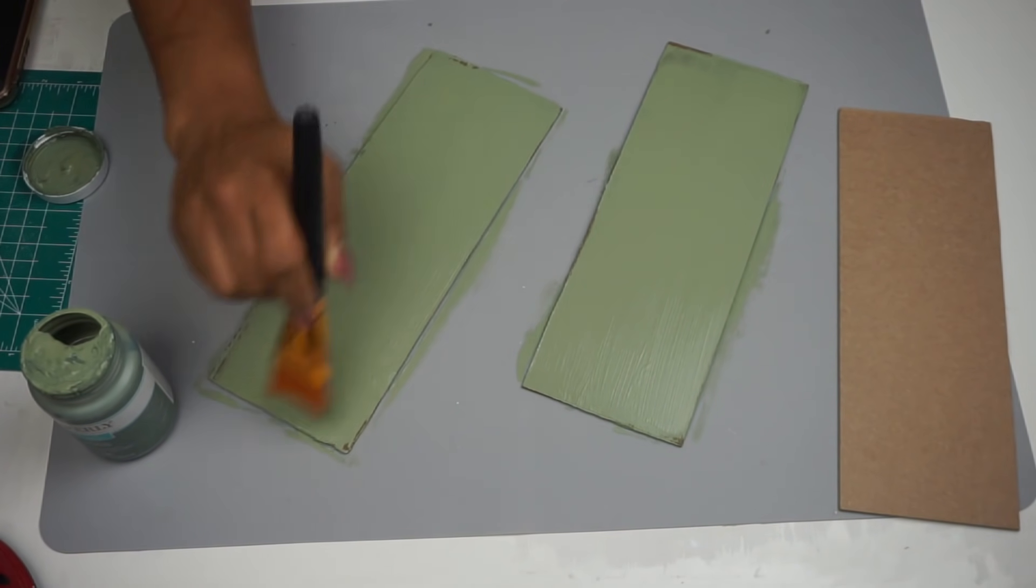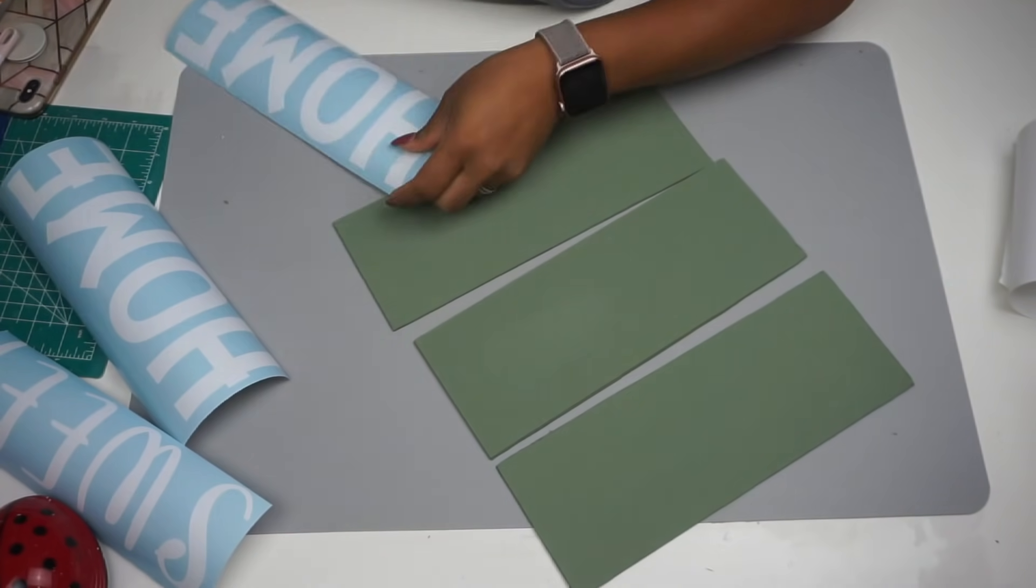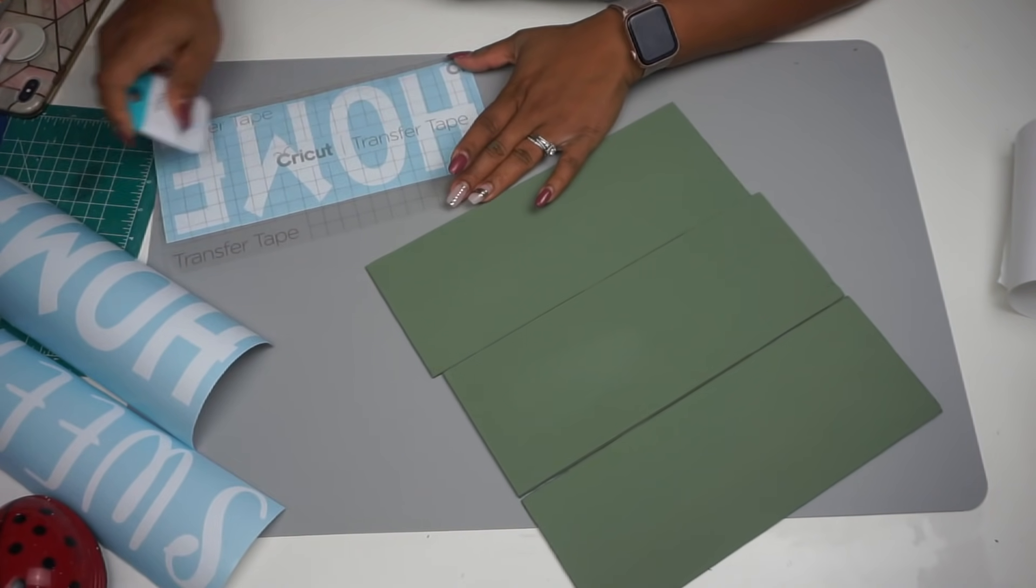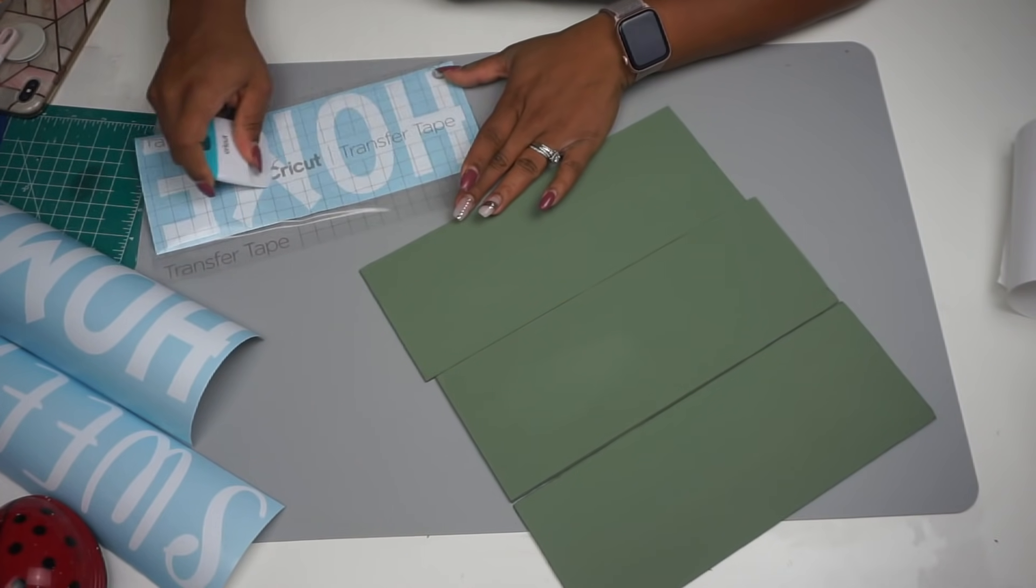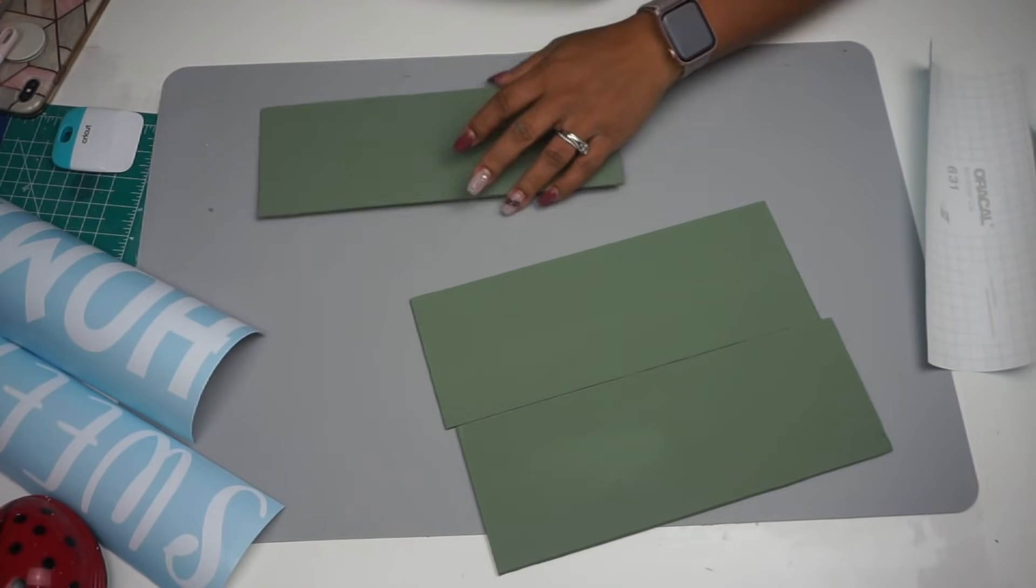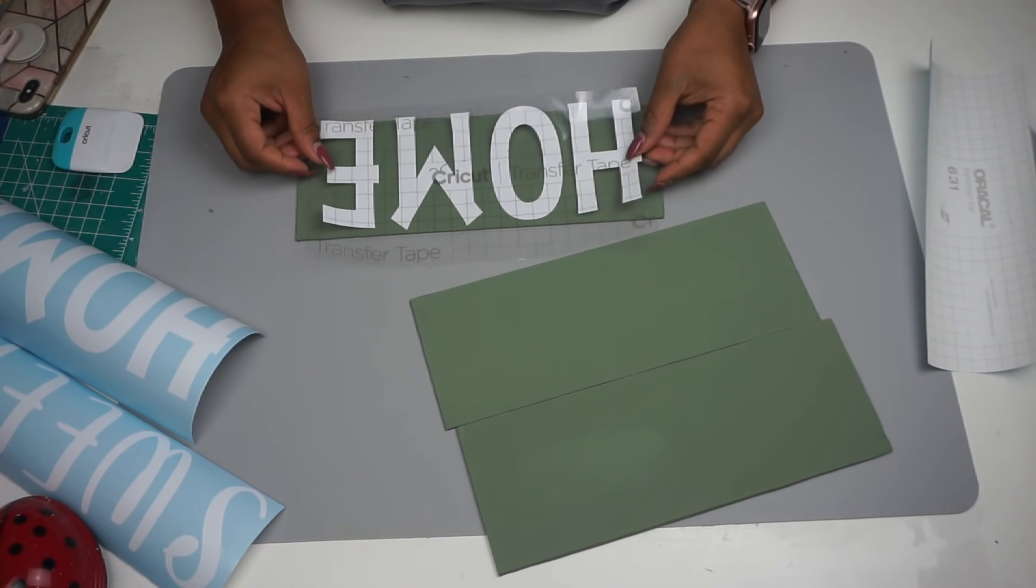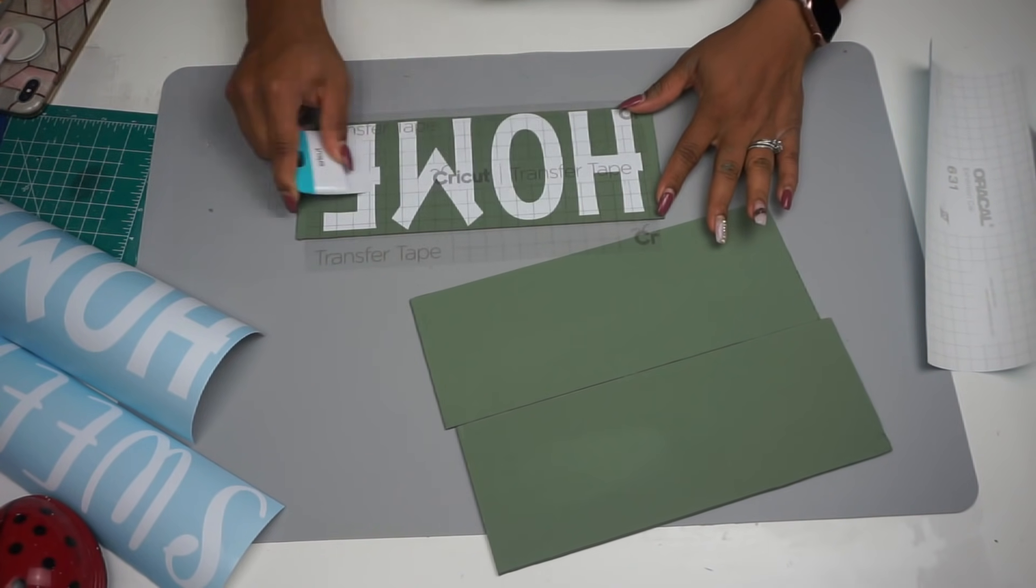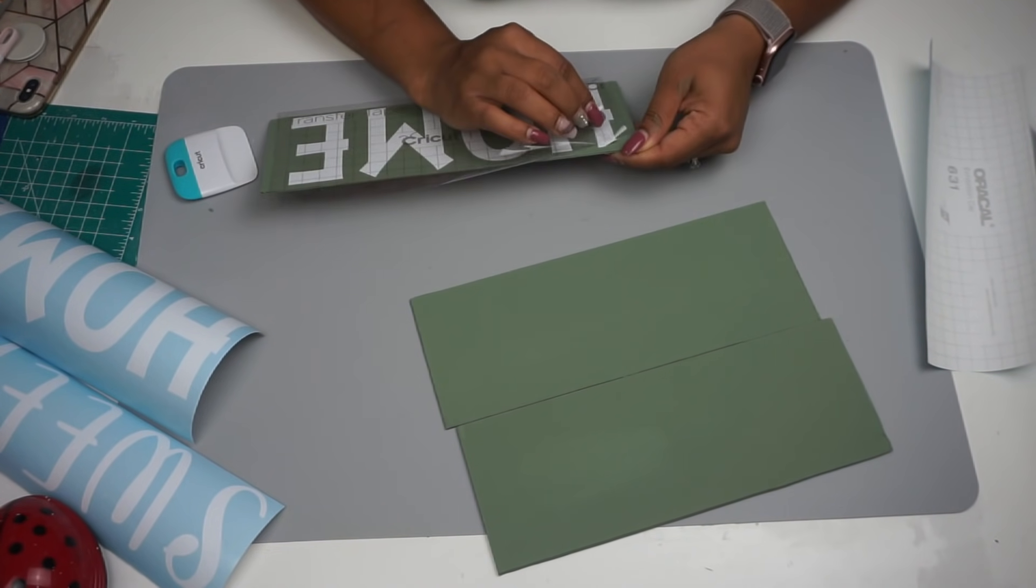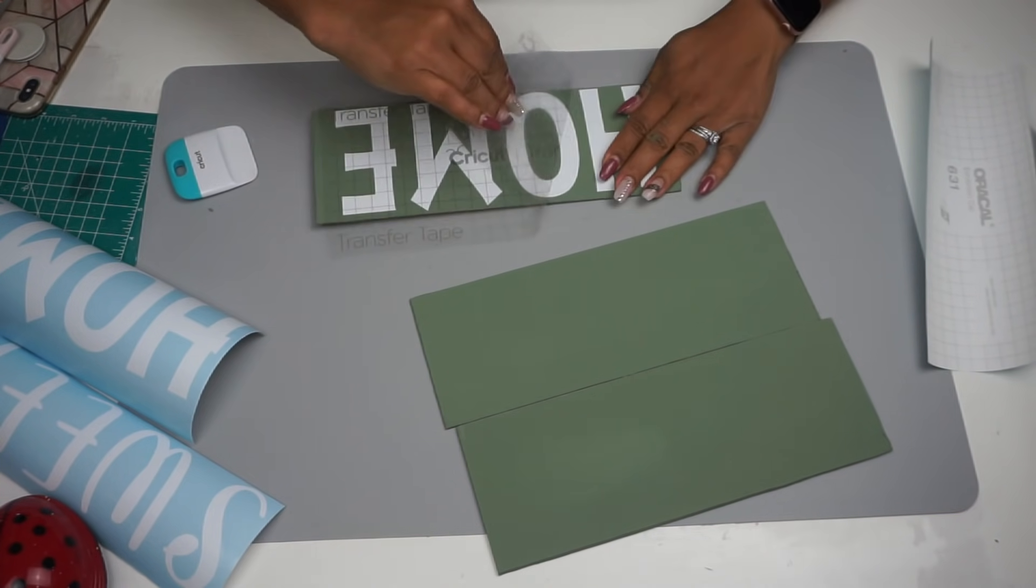Then I went to my Cricut and printed and cut out the phrase home sweet home. I will have the font in my description box below because I use two different fonts for this. The sweet word is a different font. I really love the way that this turned out. But all I did is just adhered it with my Cricut transfer tape.